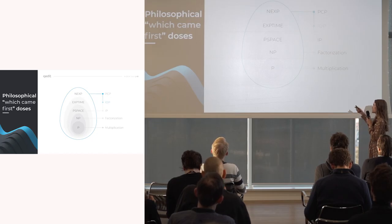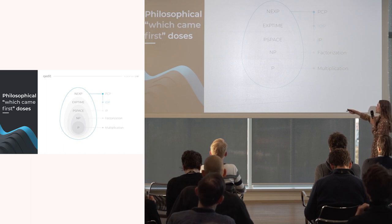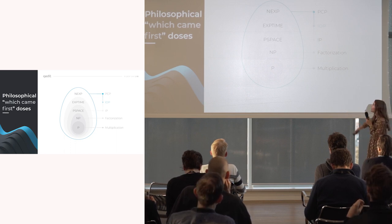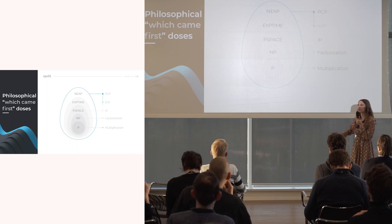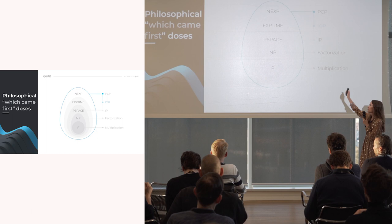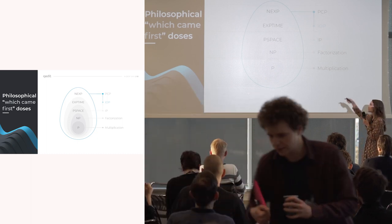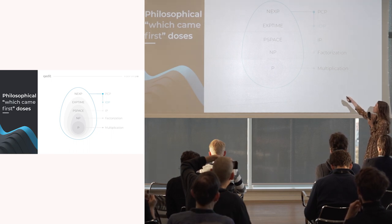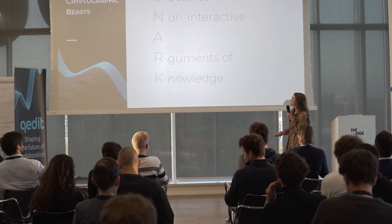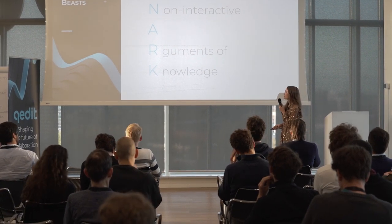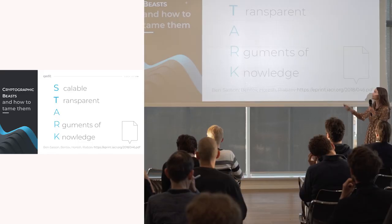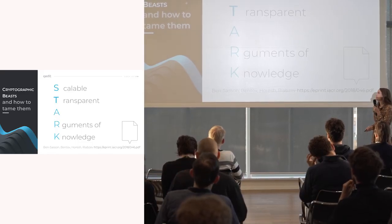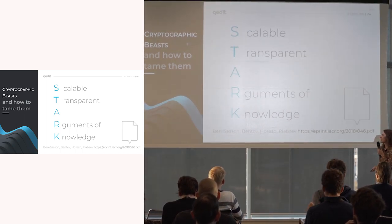Let's look at the model we're working with. Most of you are familiar with this kind of graph: the P/NP problems. P problems are easy problems, like multiplication. We hope that factorization is harder, which allows public key cryptography. Then we have more complex problems. The idea is that in STARKs you can make more complex statements. SNARKs stands for Succinct Non-Interactive Arguments of Knowledge, and this talk is about something similar — STARKs — where S stands for Scalable and T for Transparent.